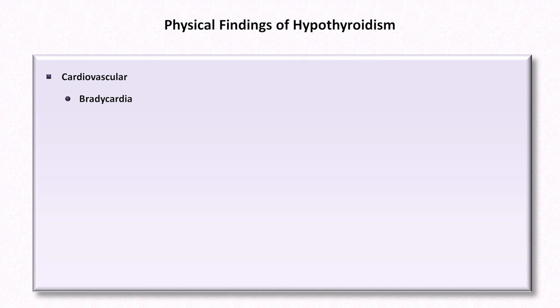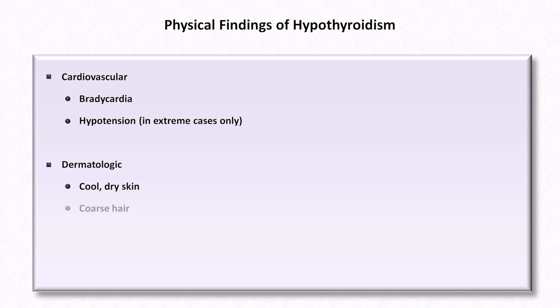An aspect of the physical diagnosis of thyroid disease that may not be immediately apparent is that the most diagnostically helpful signs are physically removed from the thyroid gland. As thyroid hormone has an extremely diverse range of normal actions in the body, both hypo- and hyperthyroidism cause an equally diverse range of exam abnormalities. Starting with hypothyroidism: in the cardiovascular system, bradycardia is common, and in extreme cases patients may be hypotensive. Regarding the dermatologic exam, the skin is often cool and dry, with coarse hair, brittle nails, and rarely a yellowish discoloration thought to be secondary to decreased conversion of beta-carotene to retinol, with subsequent hypercarotenemia.